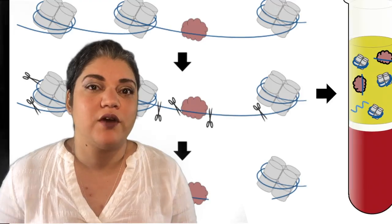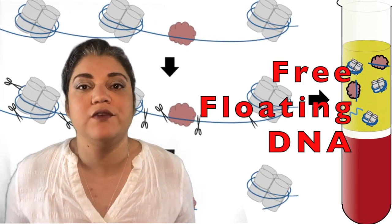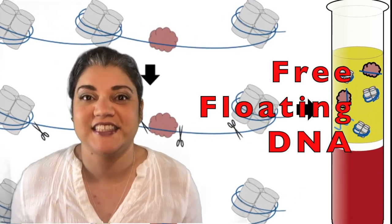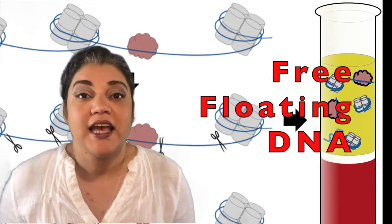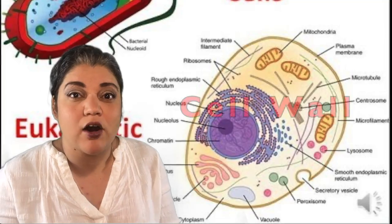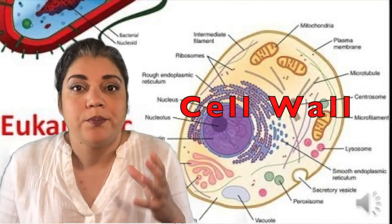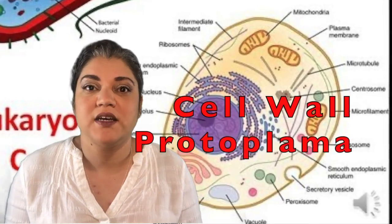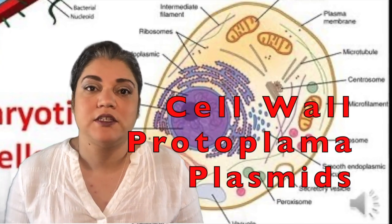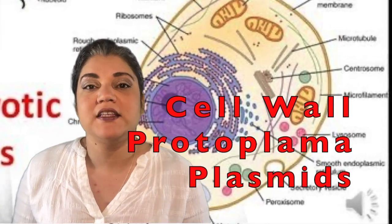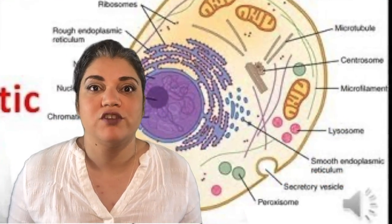and even within you and me. They can quickly grow without a host under favorable conditions via binary fission. Bacteria also have free-floating DNA, a cell wall, protoplasm, and plasmids, which make them more resistant.